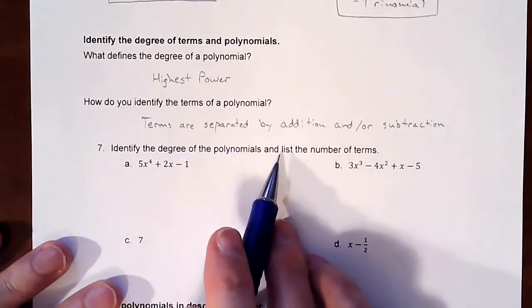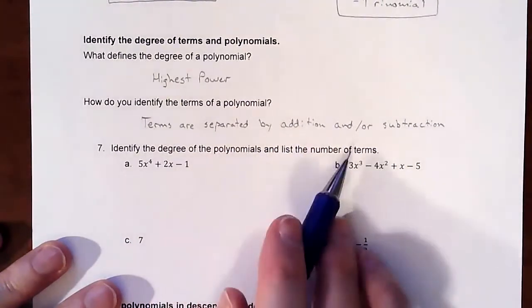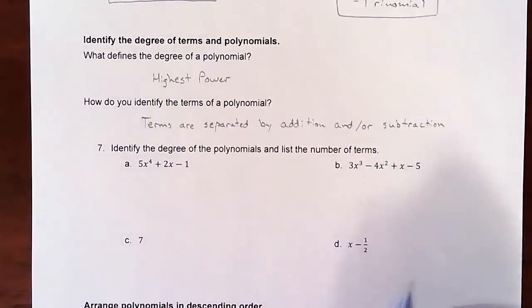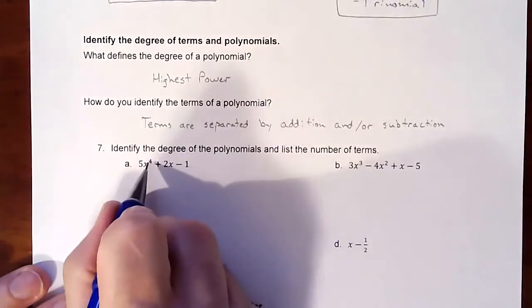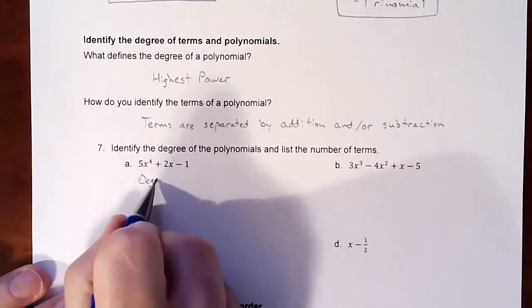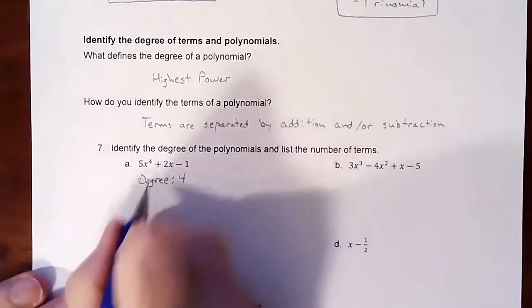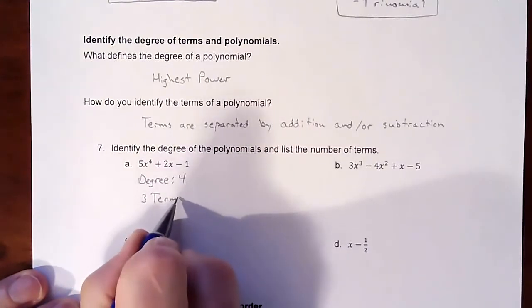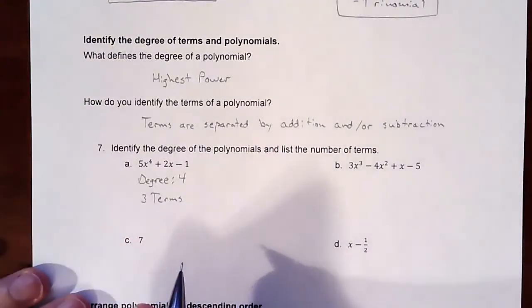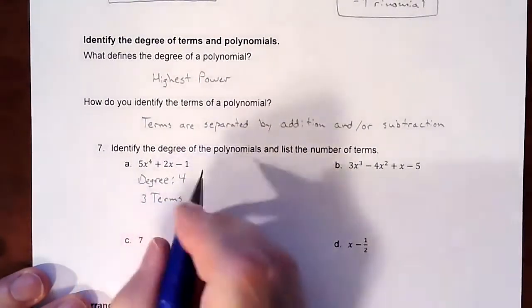We are going to name it by its degree and then list the number of terms. All we're looking to say is that this is a degree of four and it has three terms, which is going to make it a trinomial. That's it, right? Highest degree and then one, two, three terms.